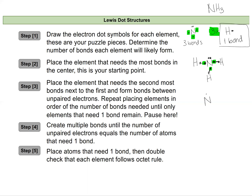And I've got a Lewis dot structure. I can redraw it cleanly with my one lone pair and three bonds to hydrogen. I can double check: each hydrogen has two electrons and no lone pairs, so they're following the duet rule. My nitrogen has one lone pair and three bonds, each with two electrons, giving eight electrons around nitrogen — so it's following the octet rule. I like to double check at each atom rather than just counting total valence electrons, because it pinpoints mistakes more clearly.